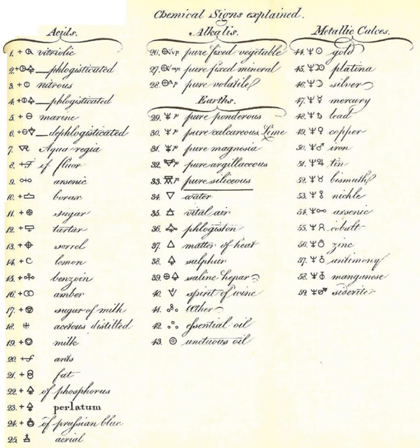Several symbols indicate units of volume, weight, or time, including: Hour, Dram, half dram, Ounce, half ounce, and Scruple.